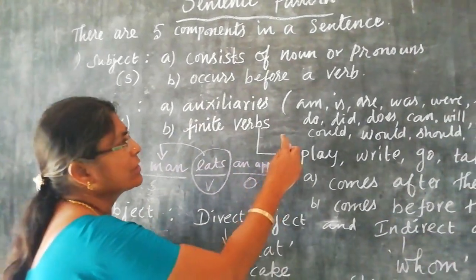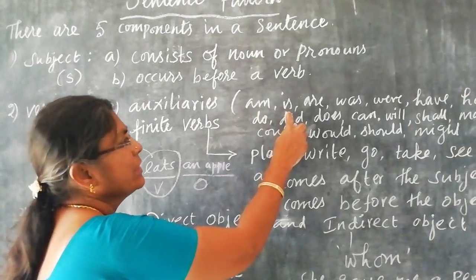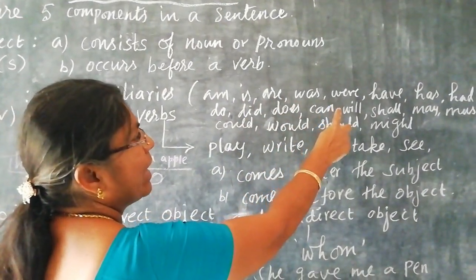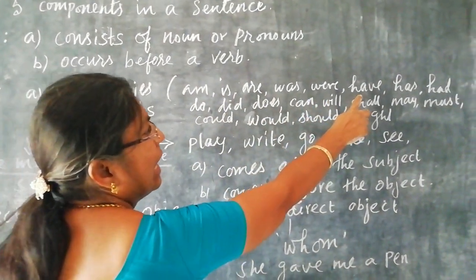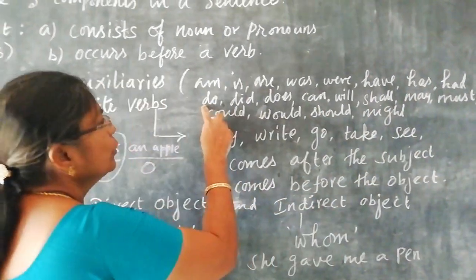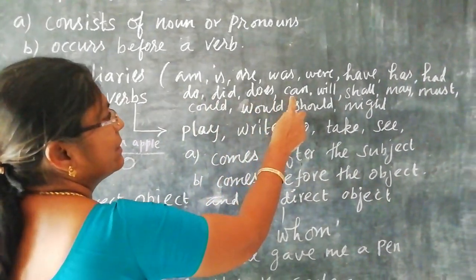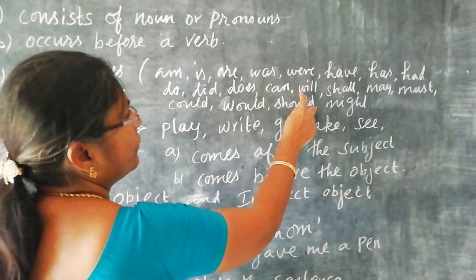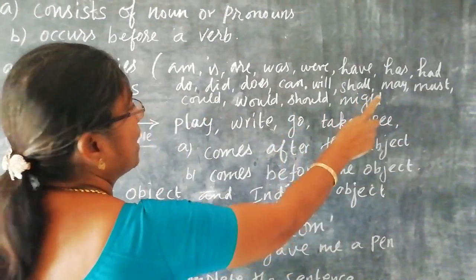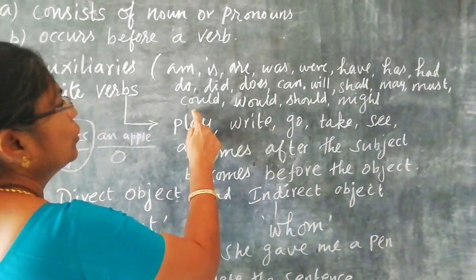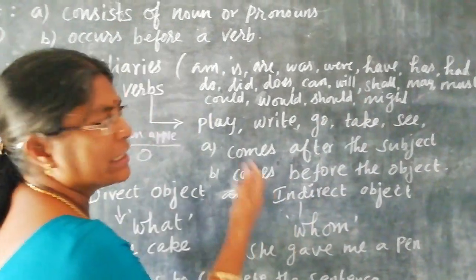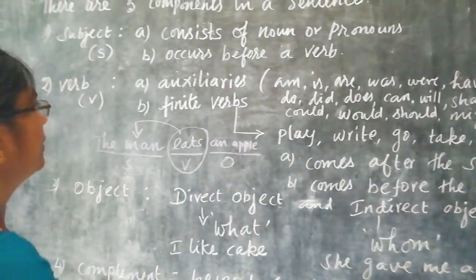The auxiliary verbs are: am, is, are, was, have, has, had, do, did, does, can, will, shall, may, might, must, could, would, should. All these are called auxiliary verbs.